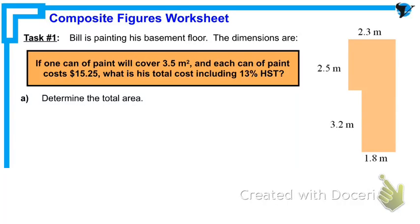In this next problem we're going to be finding the area of a basement floor and use that information to determine how many cans of paint we'll need to cover the floor and then determine the total cost.